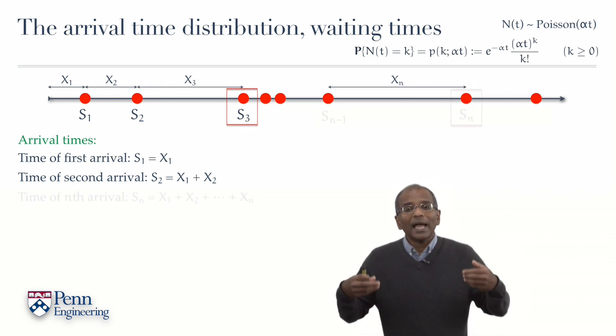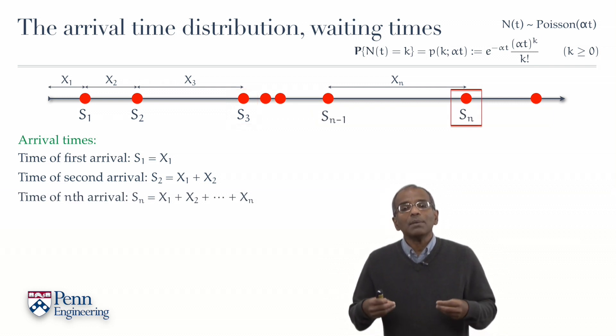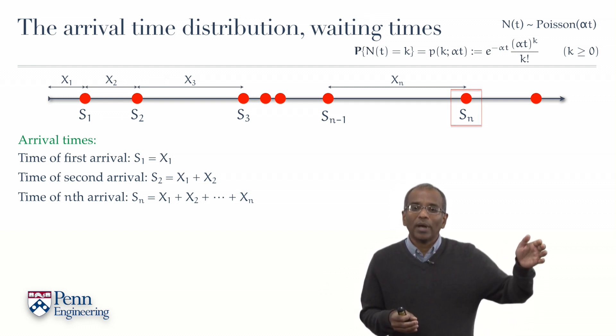And likewise, Sn is the time of the nth arrival, and we can represent Sn as the sum of the inter-arrival times X1, X2, X3 through Xn.